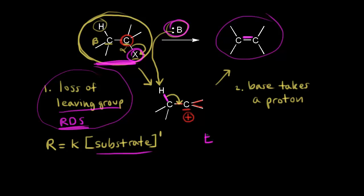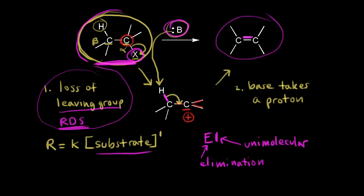An E1 mechanism: the '1' comes from the fact that this is a unimolecular rate law. The 'E' comes from the fact that this is an elimination reaction. So when you see E1, think of it as an elimination reaction that is unimolecular — the overall rate of the reaction only depends on the concentration of your substrate.